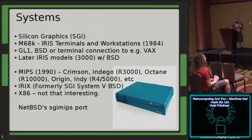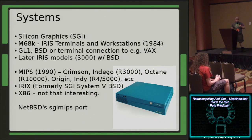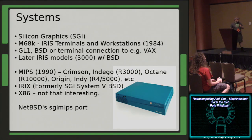SGI is another fairly well-known company, more so for their graphics capability at the time. These were the machines that supported video streaming and 3D rendering back when most people were still using text terminals. There's also a range of architectures - most of them are MIPS. They had some x86 machines, but those aren't particularly interesting, so we're going to focus on the MIPS-based systems.